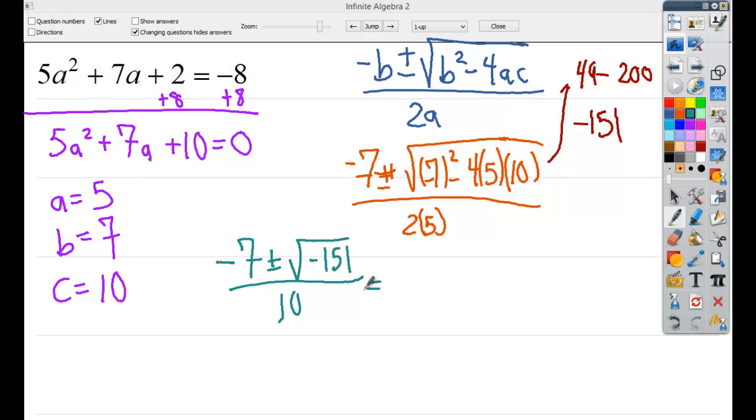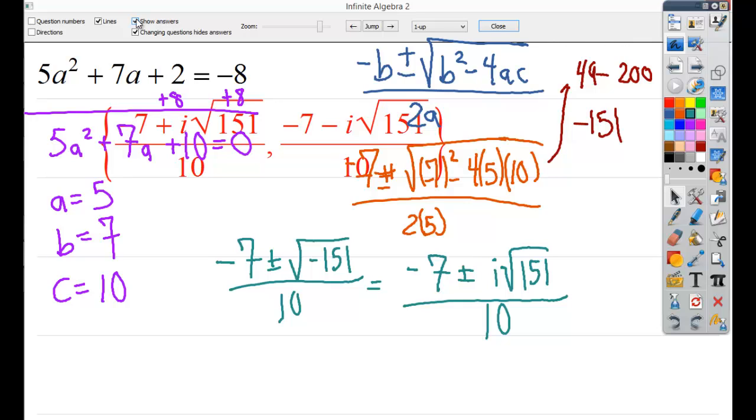Now negative 151, you could try plugging in some squares to see if you can get anything to happen. It's not looking good. The thing that's the issue is it's negative. So you can pull the imaginary number out in front. You end up with negative 7 plus or minus i times the square root of 151 over 10. Since 7 and 10 don't reduce, you're pretty much done. One answer will be negative 7 plus i times the square root of 151 over 10, and the other would be negative 7 minus i times the square root of 151 over 10.